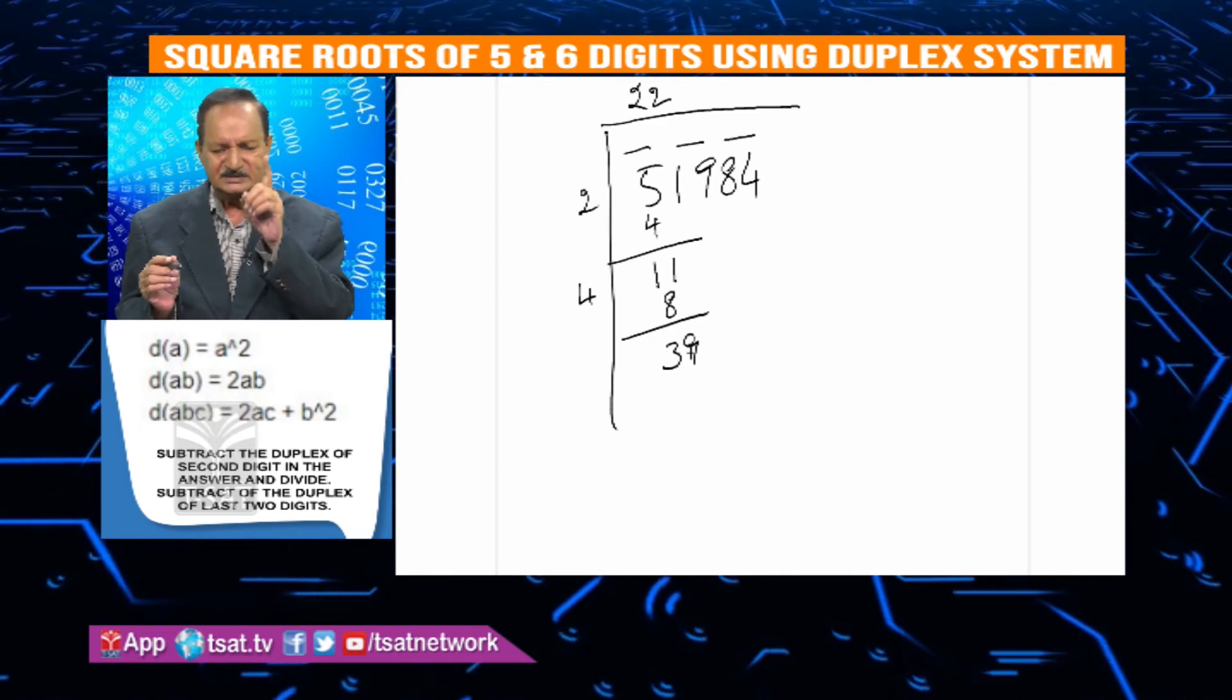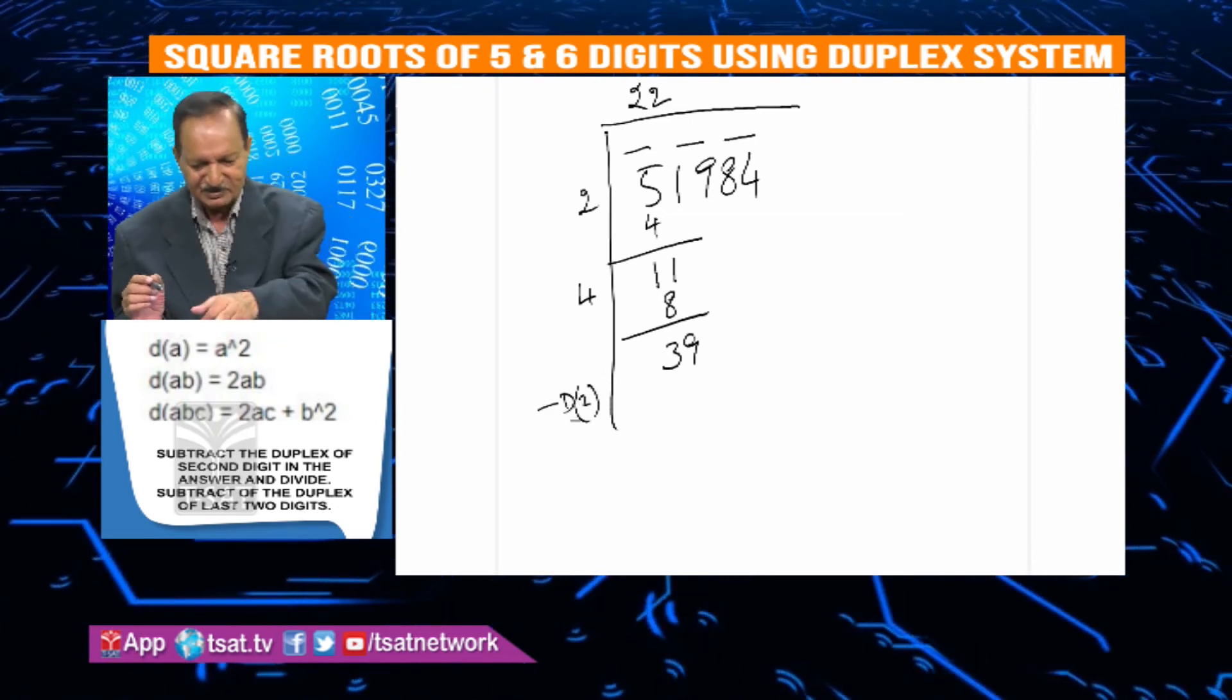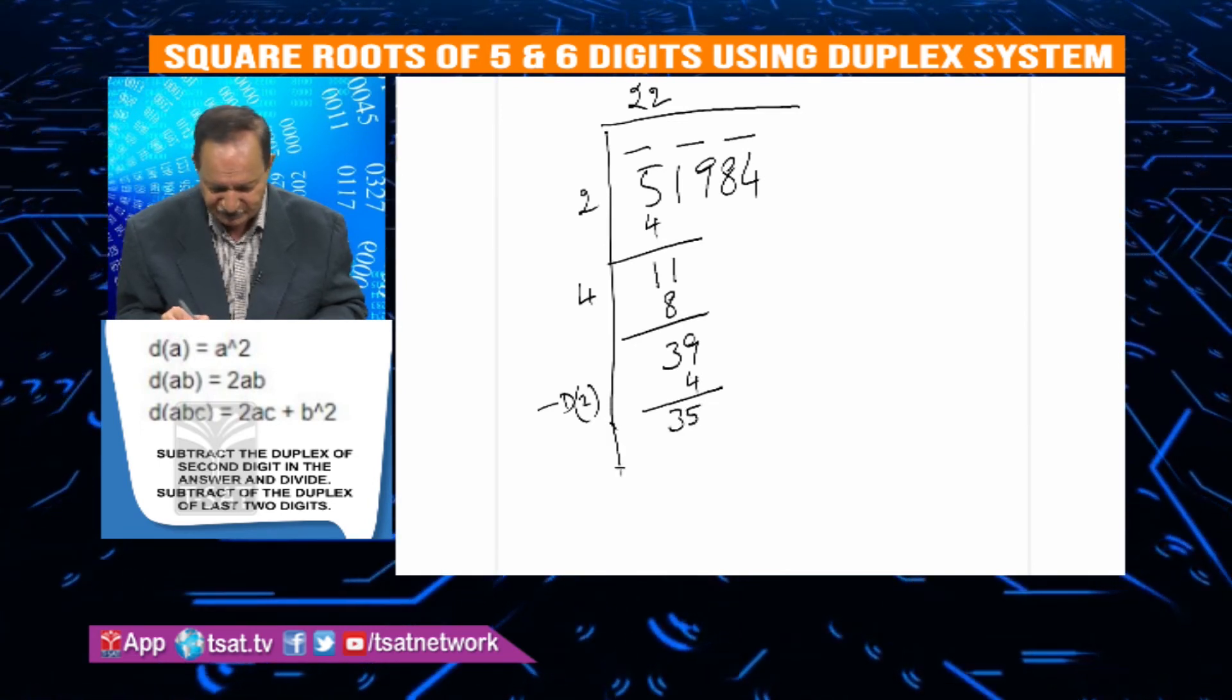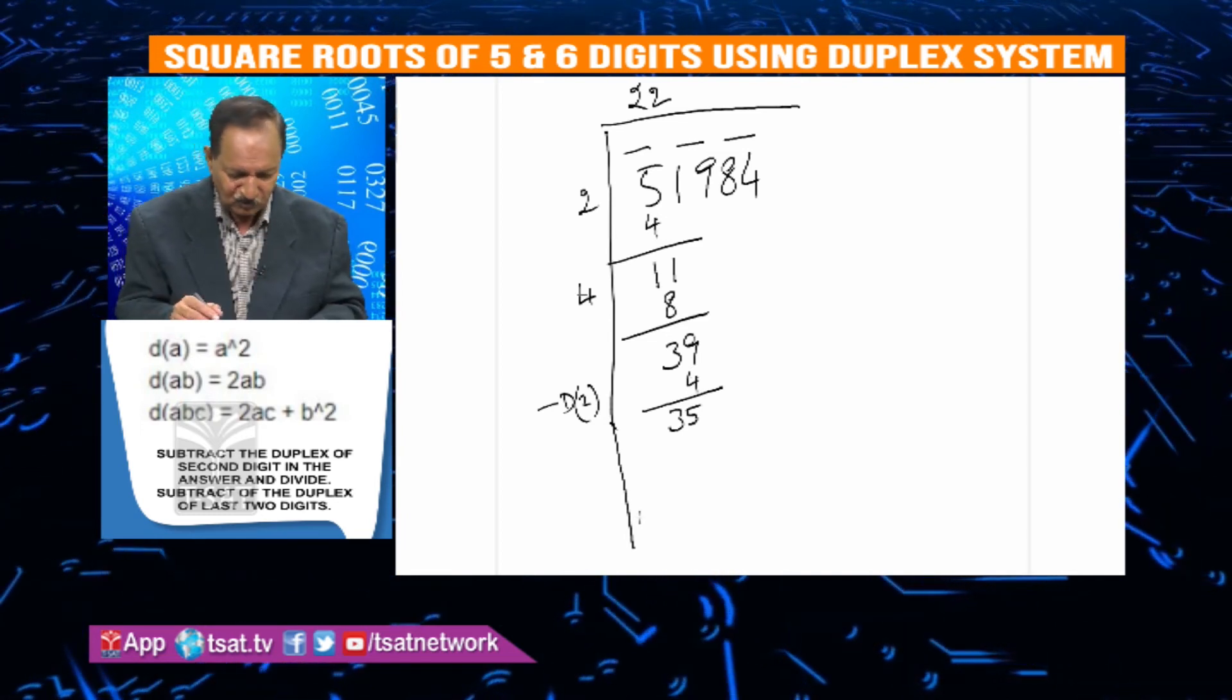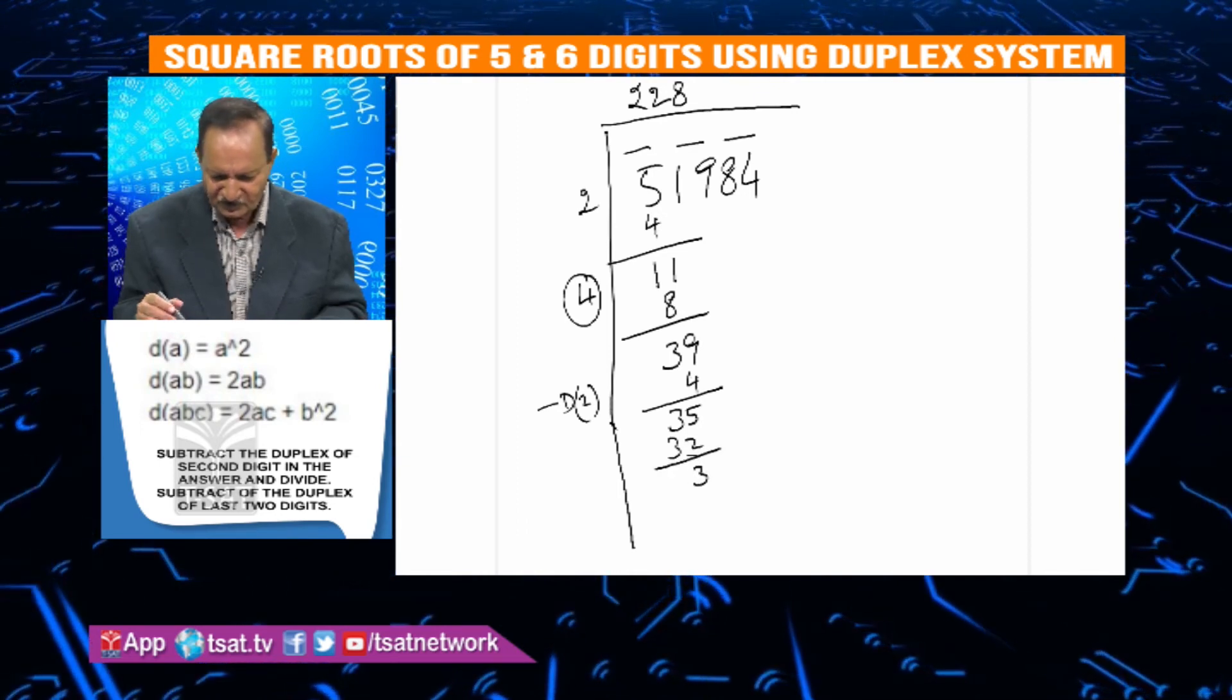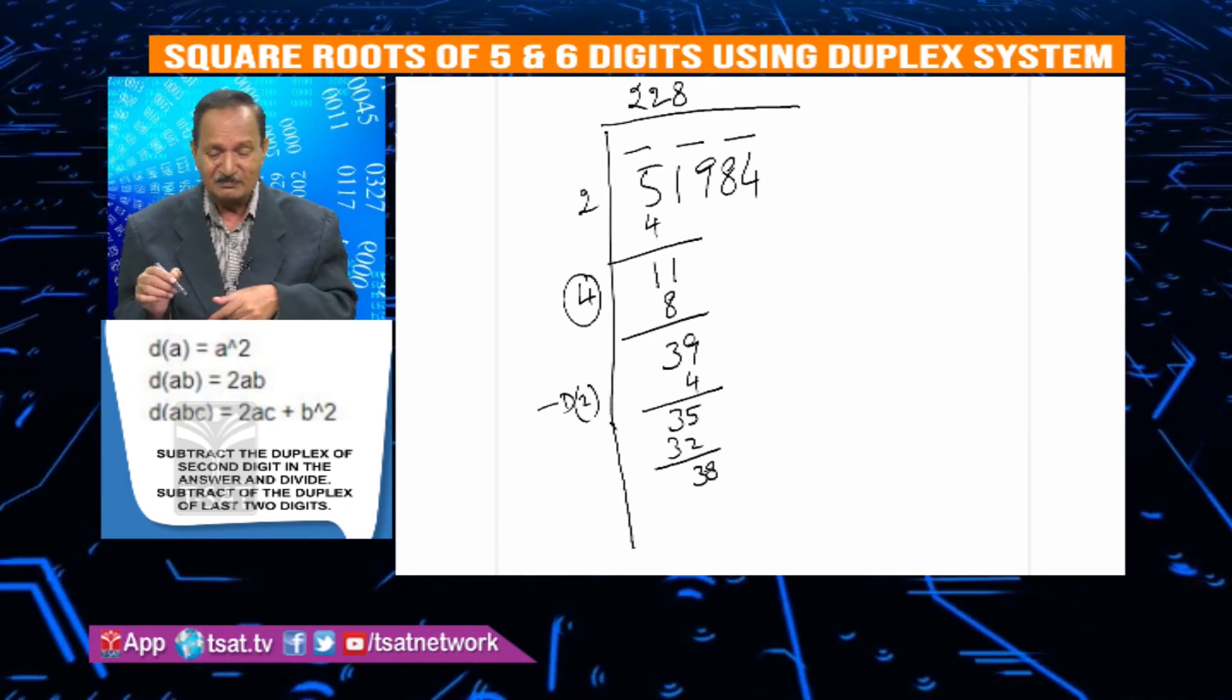Subtract the duplex of the second number in the answer and divide. Duplex of the second number - second number is 2. Duplex of 2 is 2 squared, which is 4. Subtract 4 from 9 to get 5. Then divide: 55 divided by 44 gives us 3. This answer is confirmed as a perfect square.